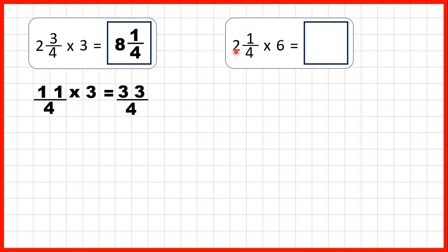Now we have 2 and 1 quarter times 6. Again we can change 2 and 1 quarter into an improper fraction. 2 times 4 is 8, plus 1 is 9, so that's 9 quarters as an improper fraction.